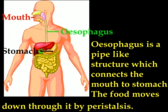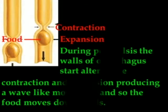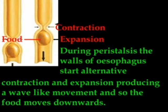The esophagus is a pipe-like structure which connects the mouth to the stomach. The food moves down through it by peristalsis. During peristalsis, the walls of the esophagus undergo alternative contraction and expansion, producing a wave-like movement so that food moves downward. This can be compared to the ejection of toothpaste from a tube.